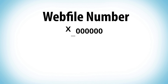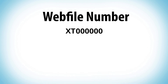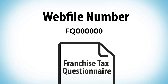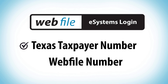Franchise tax web file numbers begin with XT and are printed on the right-hand side of the notification letter from our office. The taxpayer number is the 11-digit number located above it. Some business entities, including those newly registered with the Texas Secretary of State, may receive a letter from the Comptroller containing a web file number that begins with FQ. This access code is needed to file the franchise tax questionnaire and cannot be used to file franchise tax returns, extensions, or make payments.